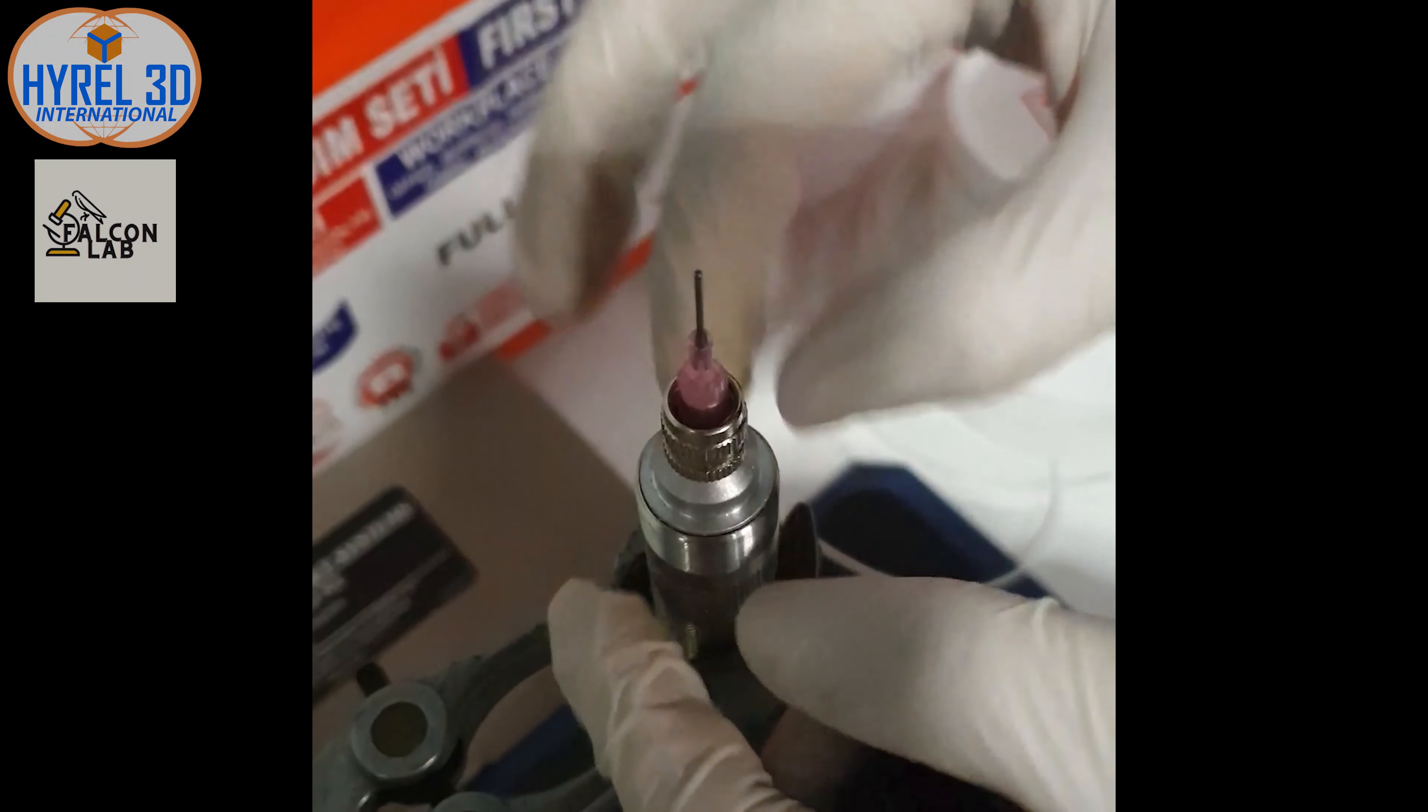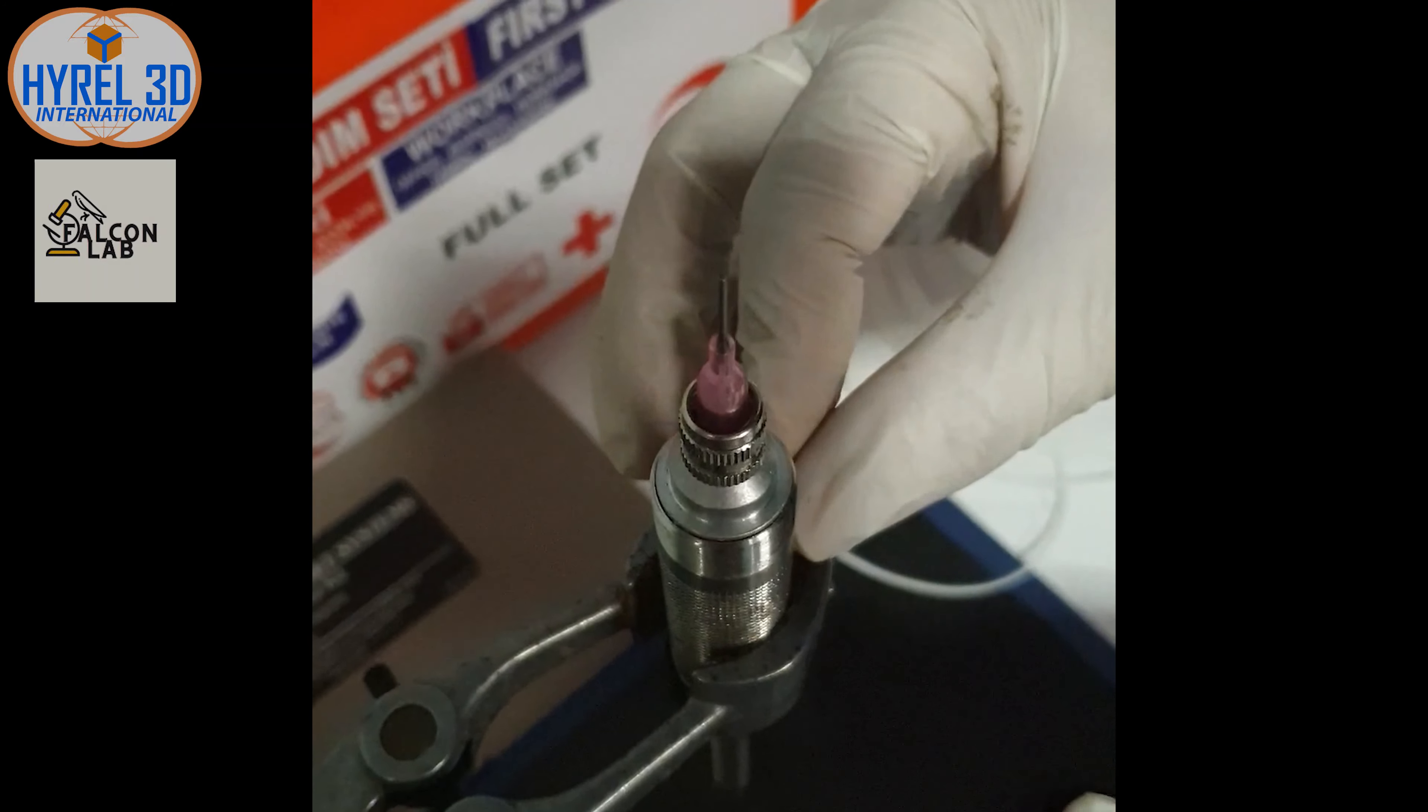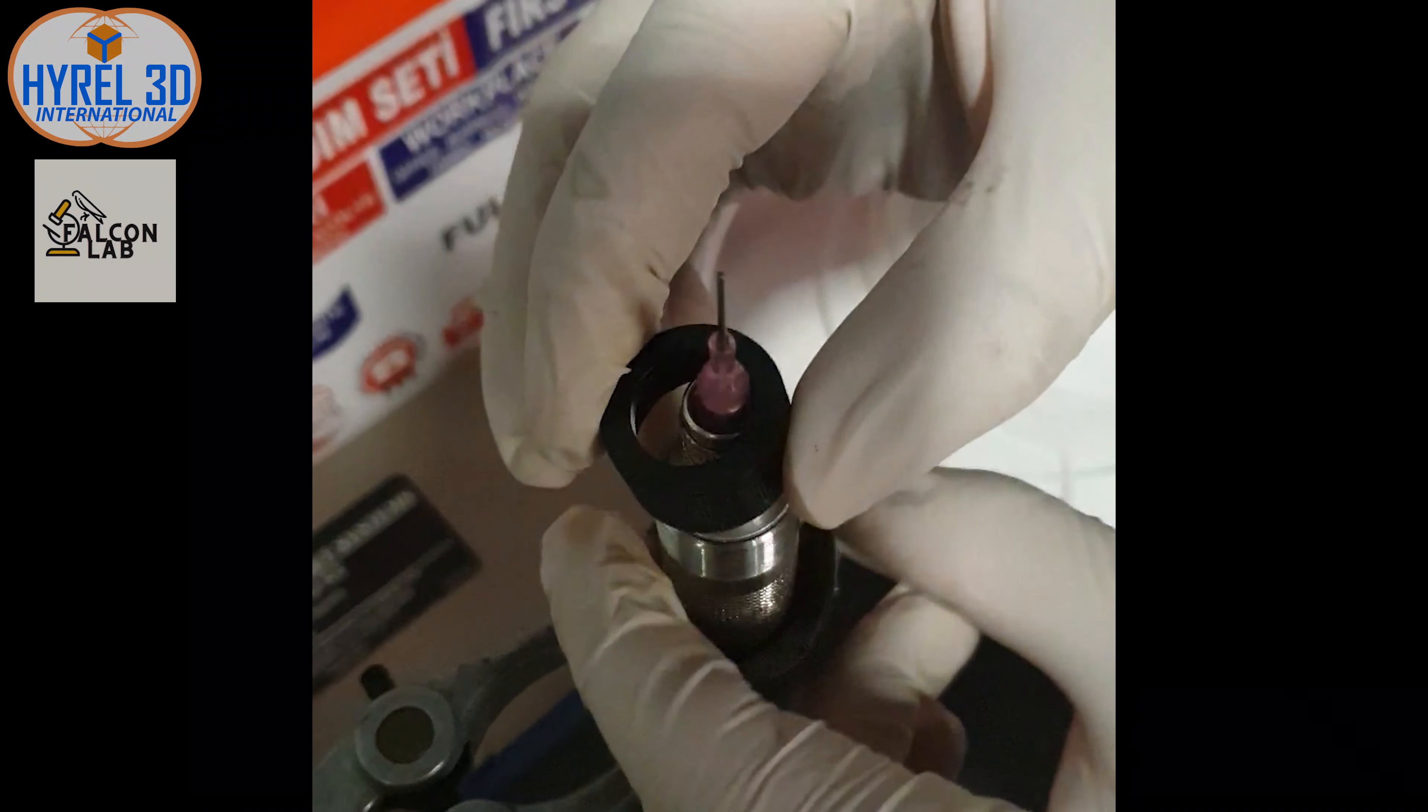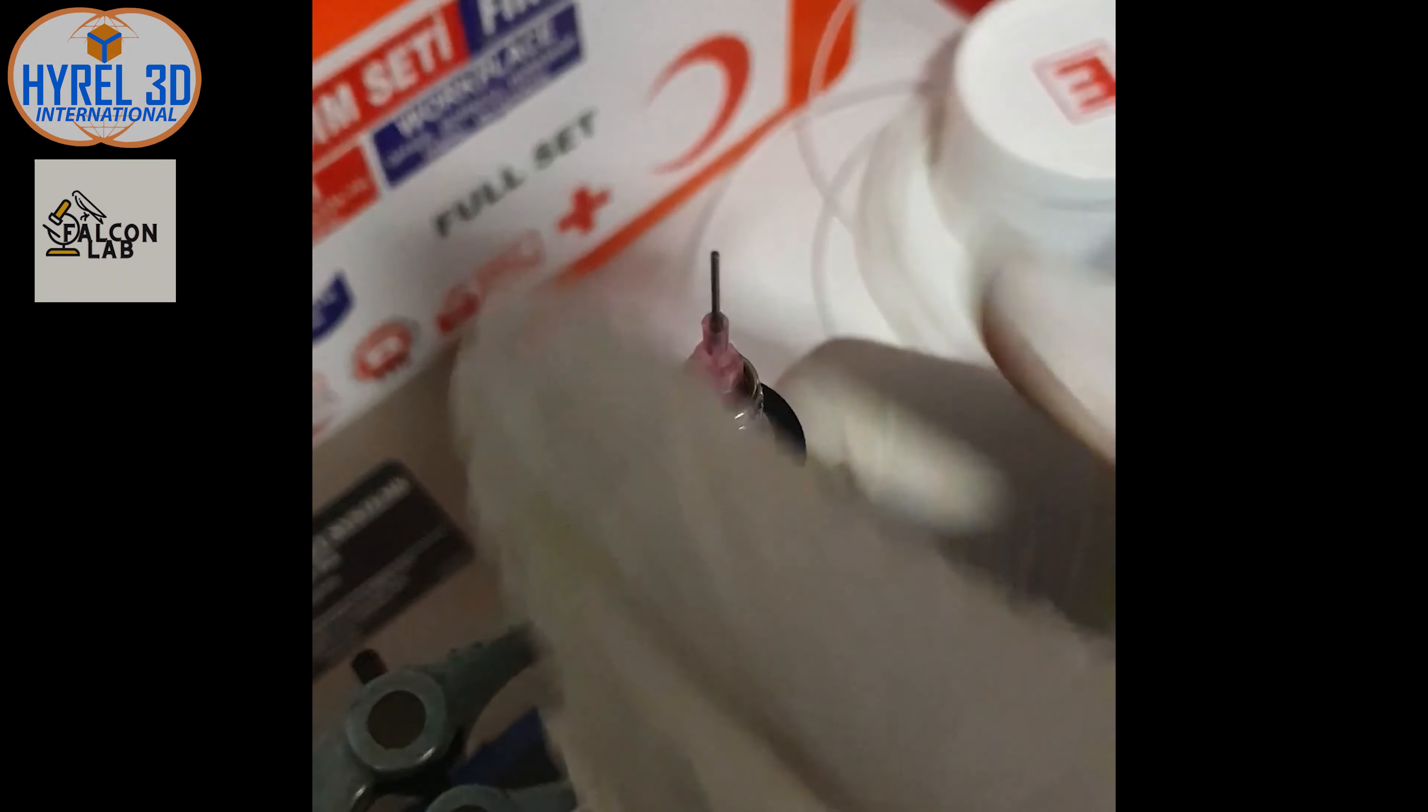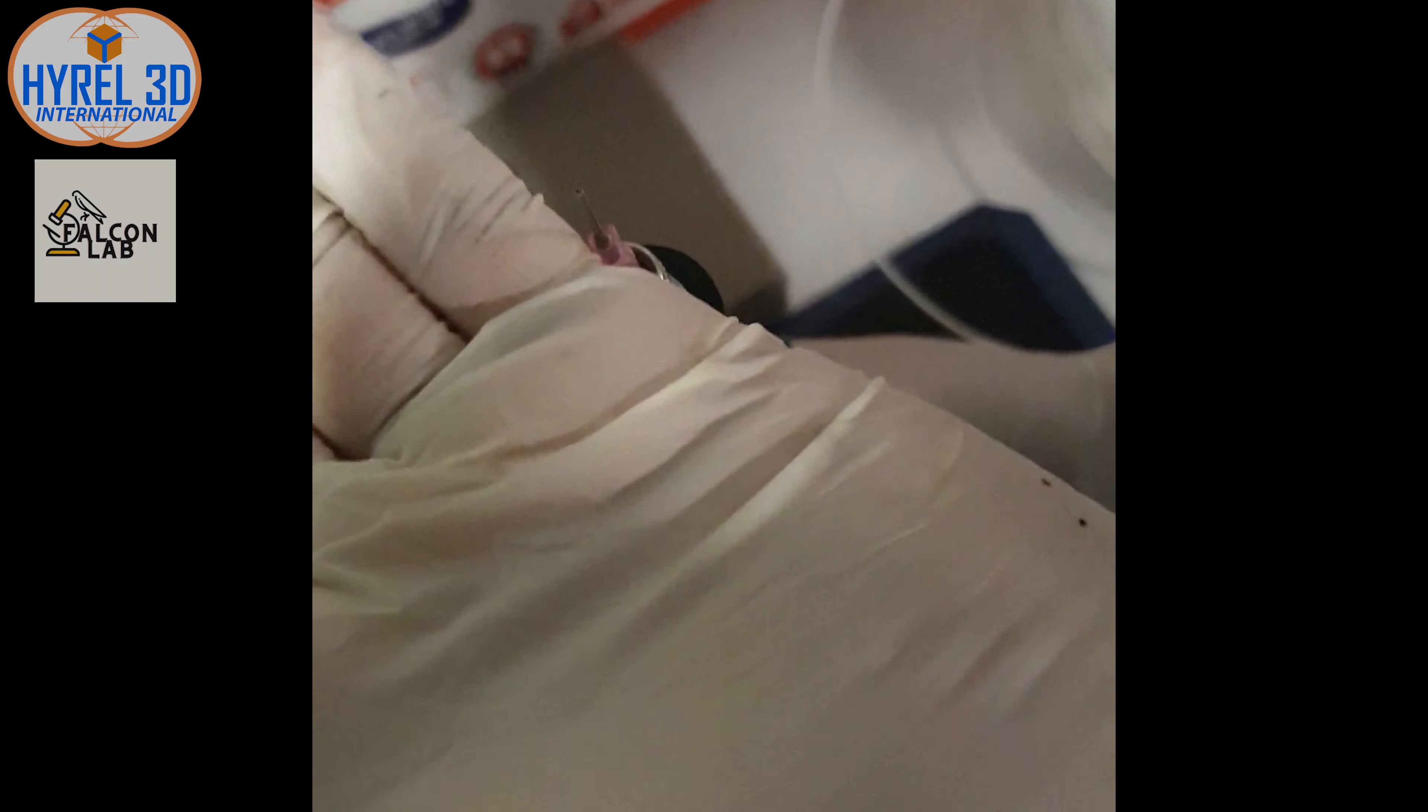We will close the cartridge now using the special tip to press the mixture. We will seal it tightly using the black cap.